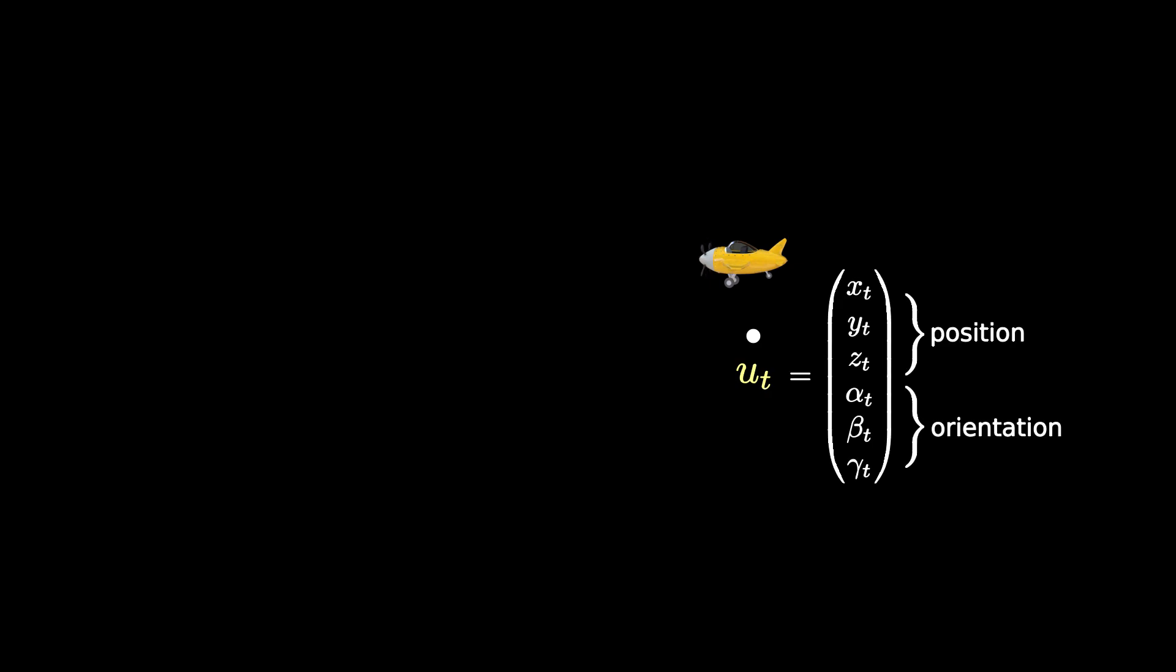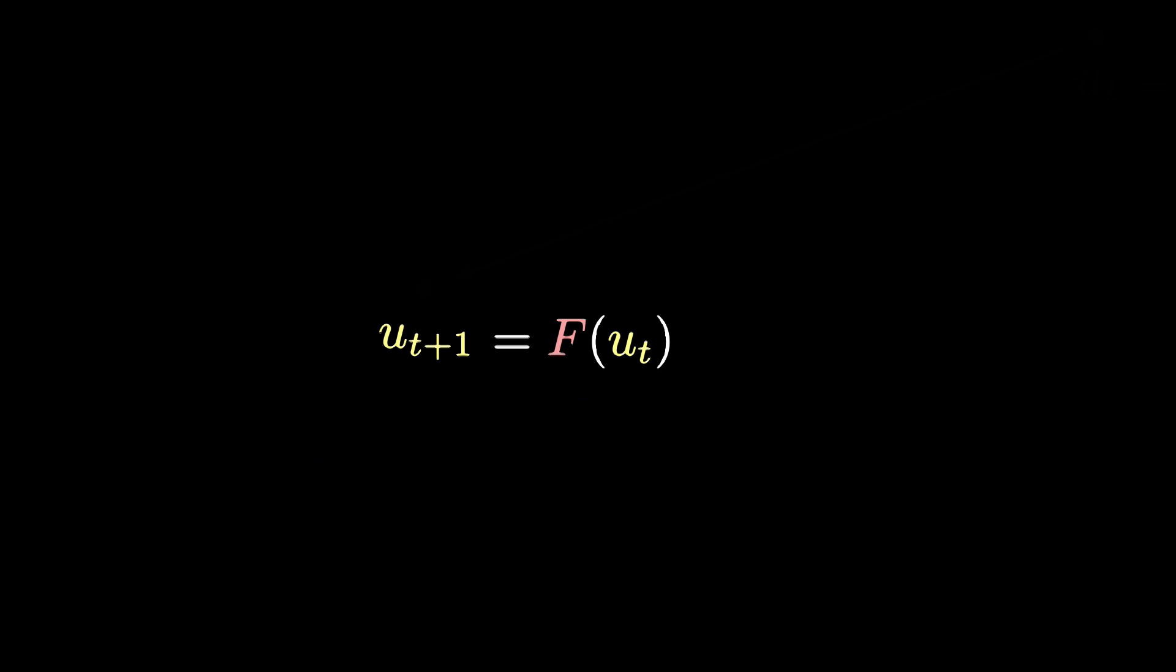In mathematics, we like to model the state of a system at time t by a vector ut that represents for example the position and orientation of the plane. At time t plus one, the system will reach another state ut plus one that is related to the current state by some function f. The most common and best studied functions f are definitely the linear ones where f of u is equal to some matrix A times u.